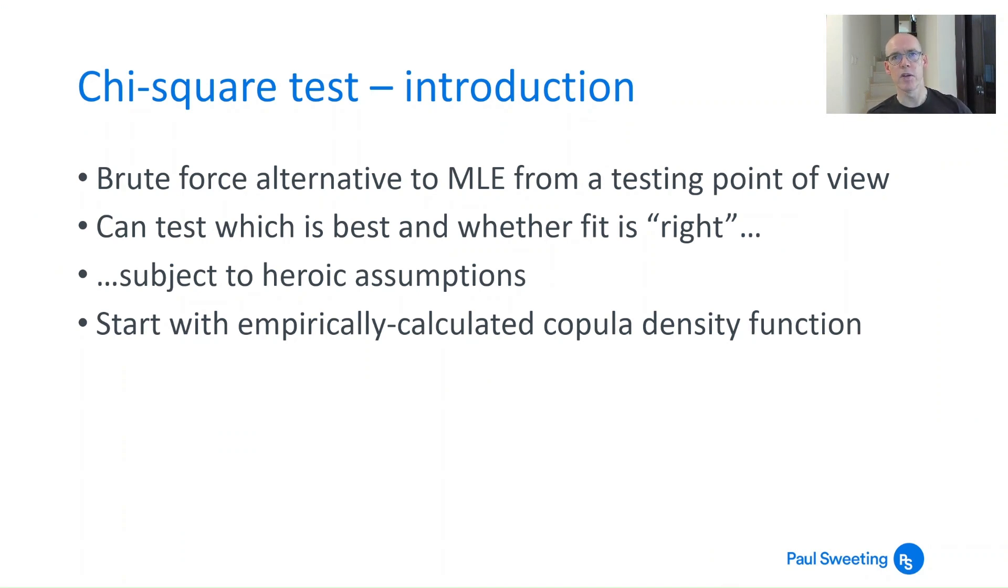So first, the kind of quick and dirty approach, which I think you could say is subject to a few theoretical challenges, requires quite a few heroic assumptions, but it's not a bad brute force alternative to maximum likelihood estimation from a testing point of view. As you know, if you're looking at something like Archimedean copulas and messing around with dozens of density functions which each run to many lines, you might want to think about this as an alternative.